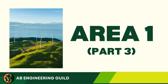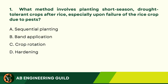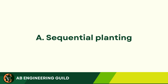Area 1, Part 3. Question 1: What method involves planting short-season, drought-tolerant crops after rice, especially upon failure of the rice crop due to pests? A. Sequential planting. B. Band application. C. Crop rotation. D. Hardening. Answer: A. Sequential planting.